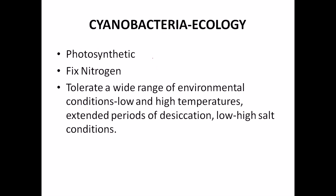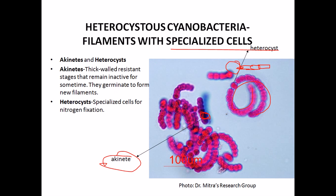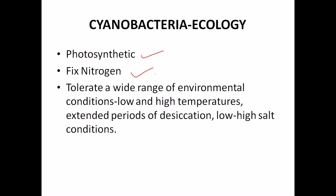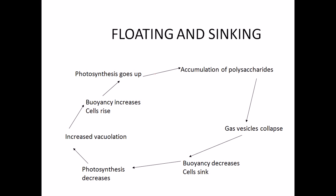Looking at cyanobacteria ecology, they are photosynthetic due to their chlorophyll and various chromogens, and some are nitrogen-fixing via heterocysts. They can also tolerate a wide range of environmental conditions — from low to high temperatures, extended desiccation, and varying salt conditions — partly due to the presence of akinetes that make them less fragile in harsh environments.